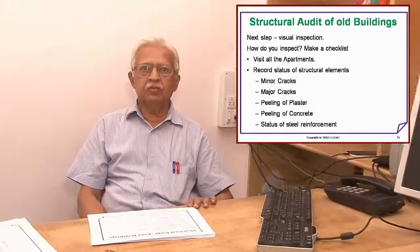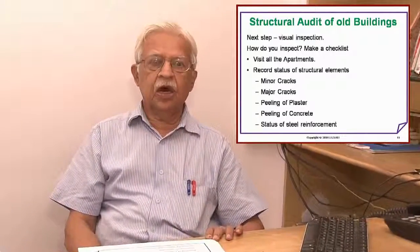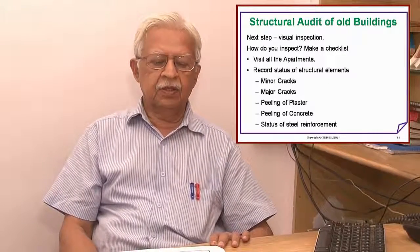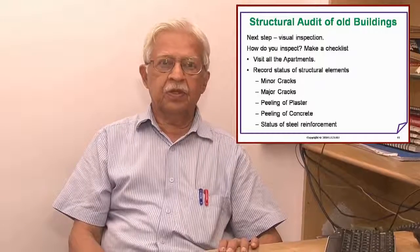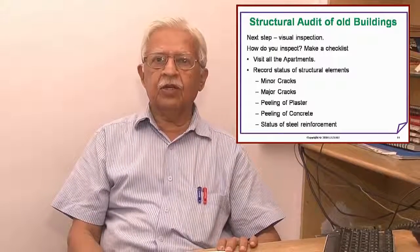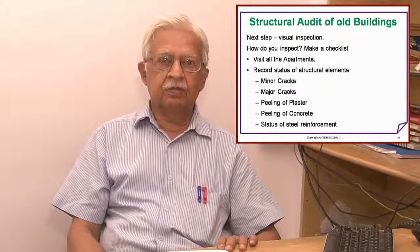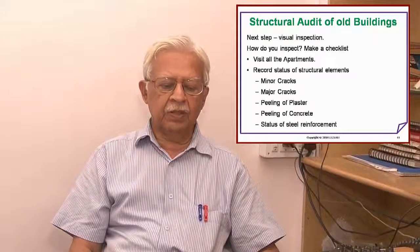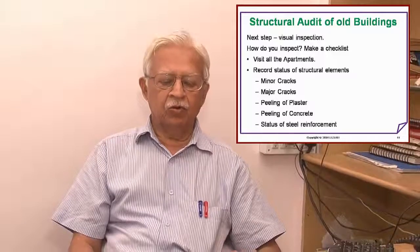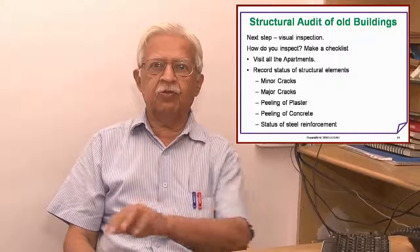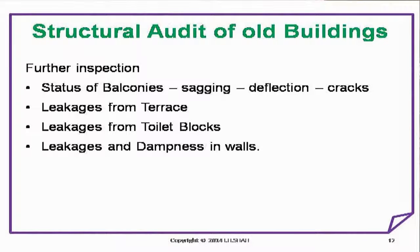Next step: visual inspection. How do you inspect? Make a checklist. Visit all apartments. Record status of structural elements — minor cracks, major cracks, peeling of plaster, peeling of concrete, status of steel reinforcement. Further inspection: status of balconies, sagging, deflection, cracks, leakages from terrace, leakages from toilet blocks, leakages and dampness in walls.